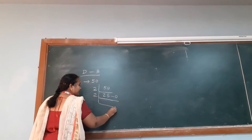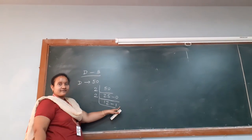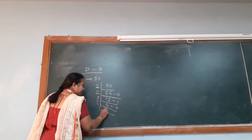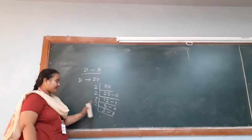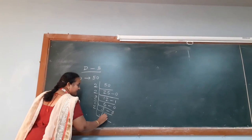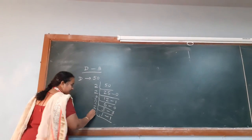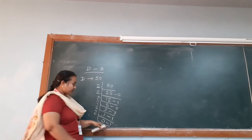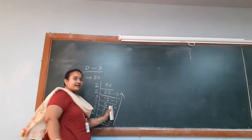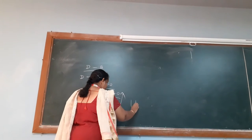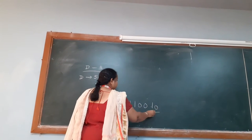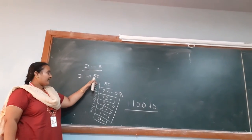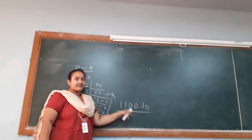Continuing the division: 25 divided by 2 gives 12 remainder 1. 12 divided by 2 gives 6 remainder 0. 6 divided by 2 gives 3 remainder 0. 3 divided by 2 gives 1 remainder 1. 1 divided by 2 gives 0 remainder 1. Reading remainders from bottom to top, the binary representation of 50 is 110010. This is the final binary number for decimal 50.